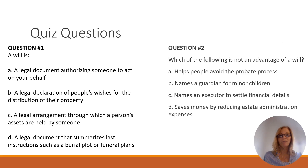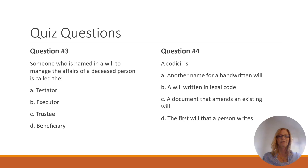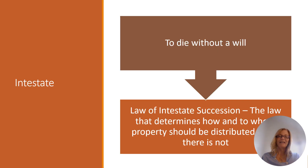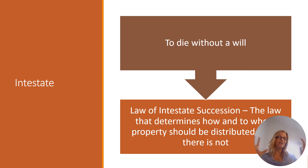We have some quiz questions here — you can pause the video, write down your answers, and then proceed. To die without a will, as we've learned, is intestate, and we go to the law of intestate succession to determine how and when everything is distributed. So we have a general idea about what a will is and what it means to die without one. But what's the difference between a will and a trust?